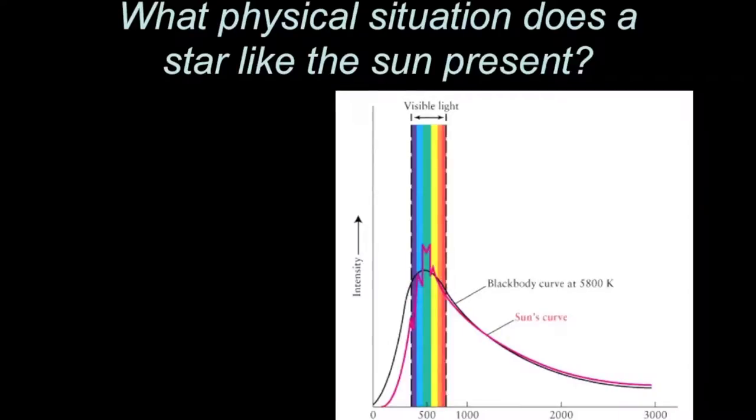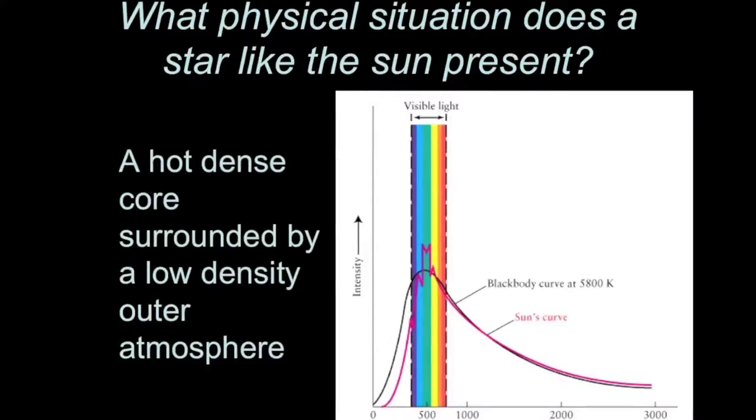So what about something like the sun? Well the sun also produces an absorption spectrum and that's because it's a hot dense core surrounded by a low density outer atmosphere. And we covered this in the Types of Spectra lecture tutorial.